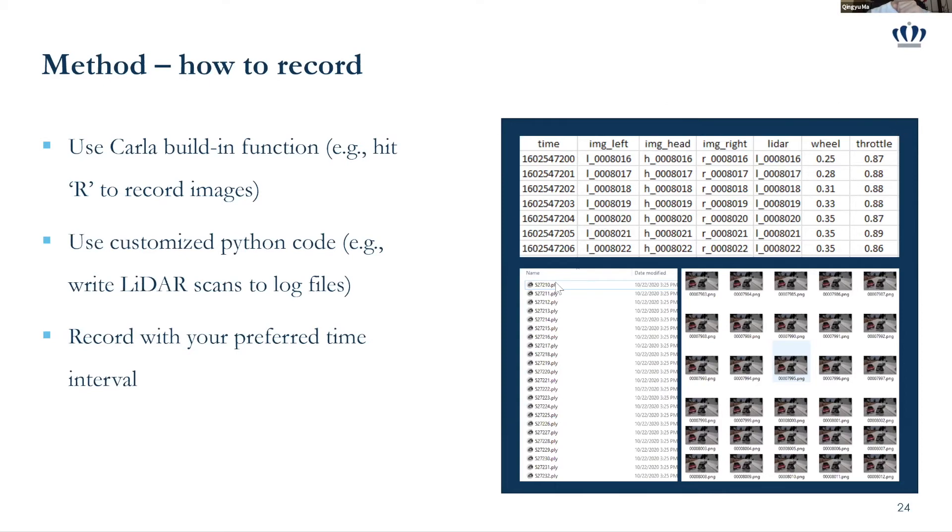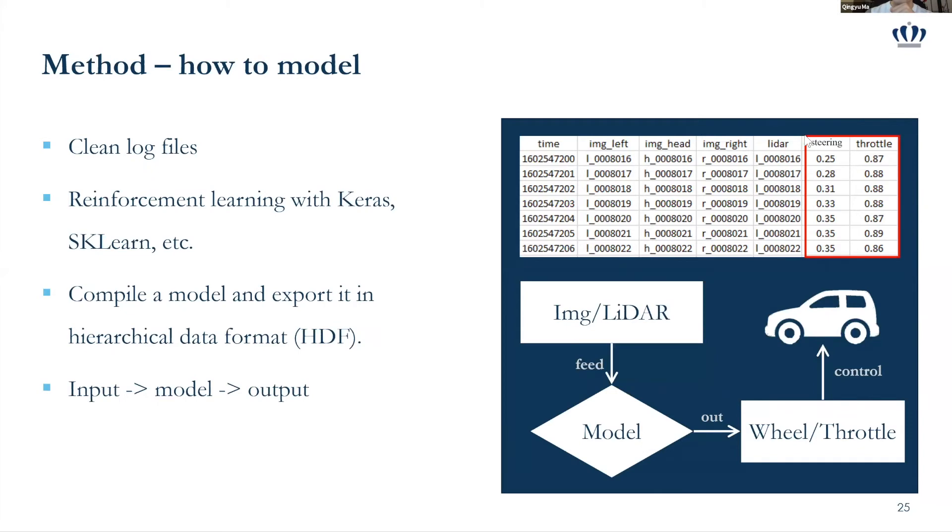And on the right side, this table shows you an idea. Actually, it's a dummy table. I put it here. It shows you an idea how the table can be organized. So the first column is recorded the timestamp for each second, for example, each second. And also image left, image head and the image right show you the folder and the file name for each image that is captured. And also LIDAR column show you the LIDAR location, the file captured. And here the steering column, steering column is like you are recording the angle or the extent of your steering. So it can be from zero to two or it can also be from minus one to one, depends on your settings. And also the throttle is something related to how you accelerate.